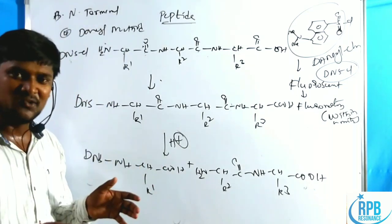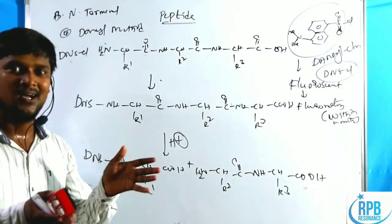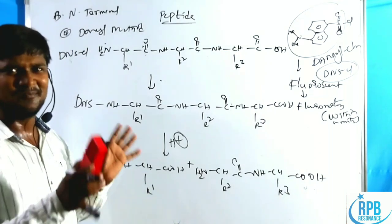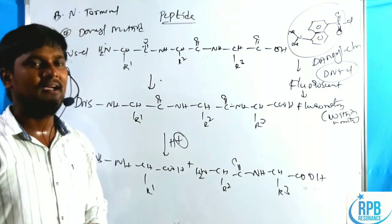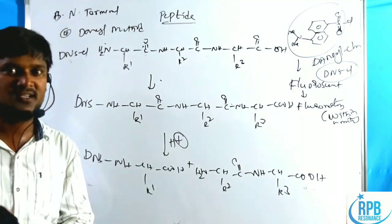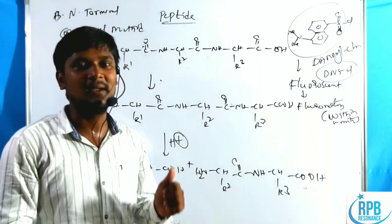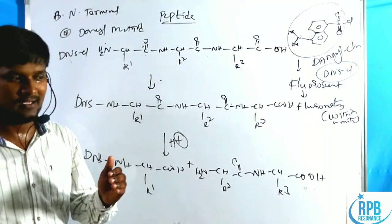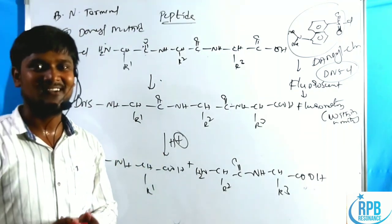This covers all the reactions regarding end group analysis — C-terminal and N-terminal amino acids. Almost all seven methods for end group analysis have been discussed. This completes the peptide synthesis topic. I will upload previous year CSIR-NET, GATE, JAM, JEE, and NEET questions on amino acid chapters. This is the final video for the amino acid chapter; if possible, I will also upload a series on proteins. Thank you for watching.